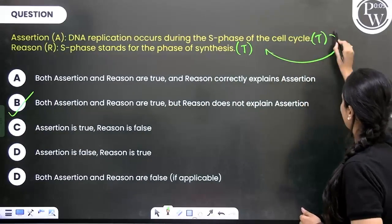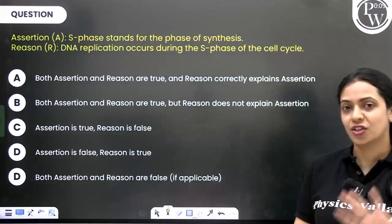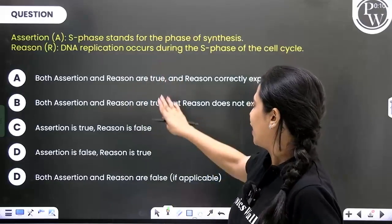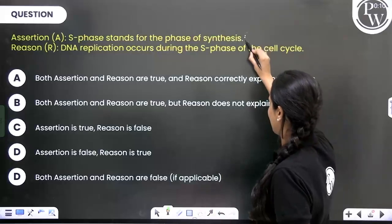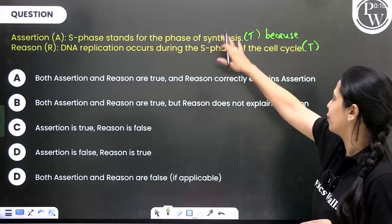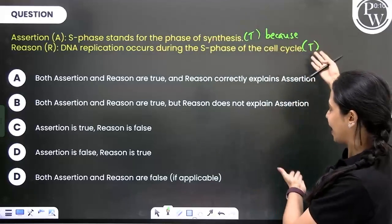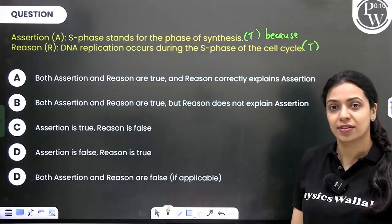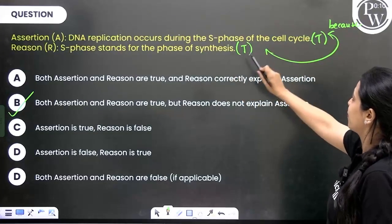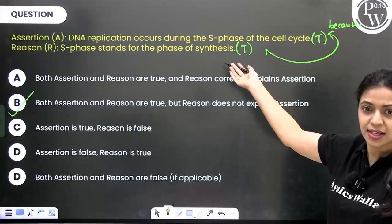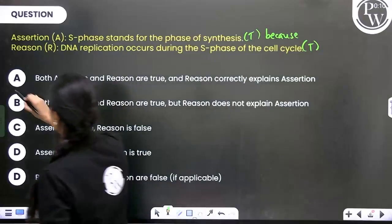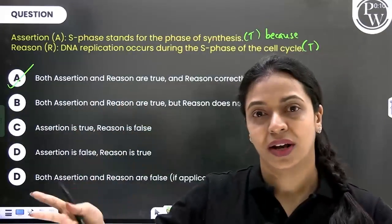If the assertion and reason statements were reversed, the question would read: Assertion — S phase stands for phase of synthesis. Reason — DNA replication occurs during S phase of the cell cycle. Inserting 'because': 'S phase stands for phase of synthesis because DNA replication happens during S phase of the cell cycle.' That makes sense — we decided to call it S phase because synthesis of DNA is happening then, not the other way around. So with the reversed statements, the reason correctly explains the assertion. The same statements with assertion and reason swapped give you two entirely different correct answers.